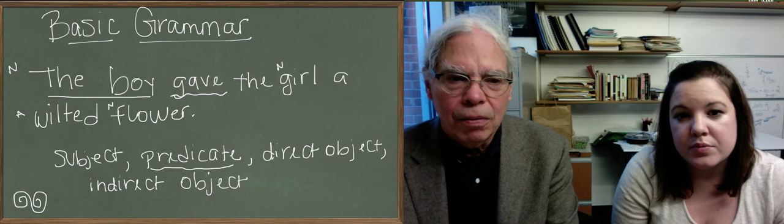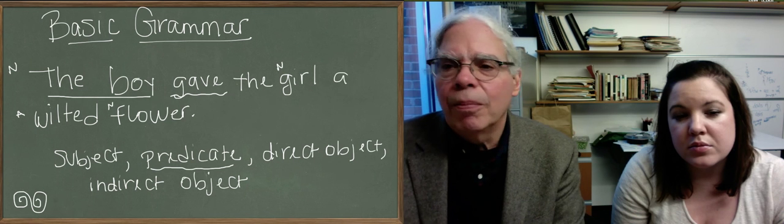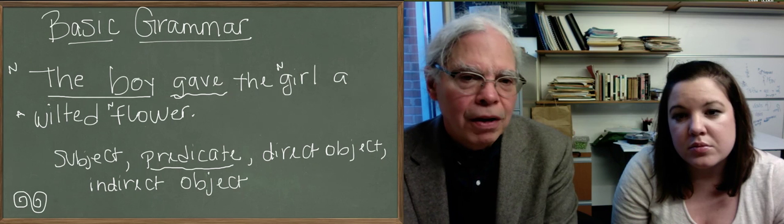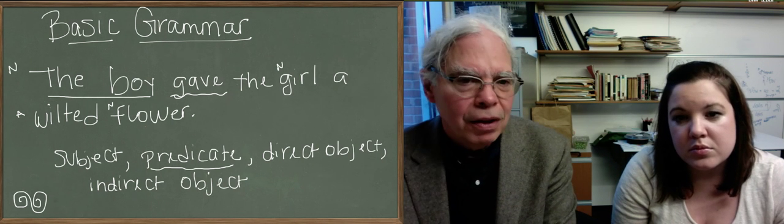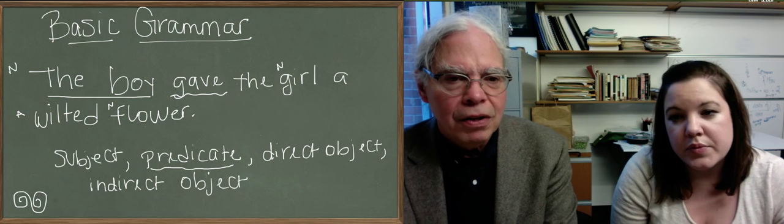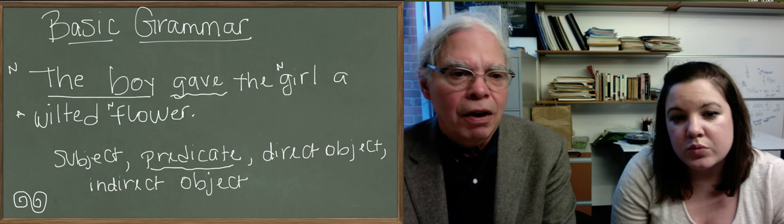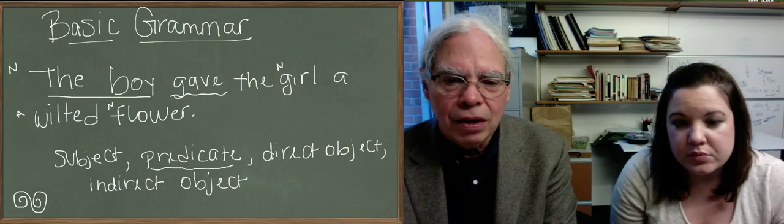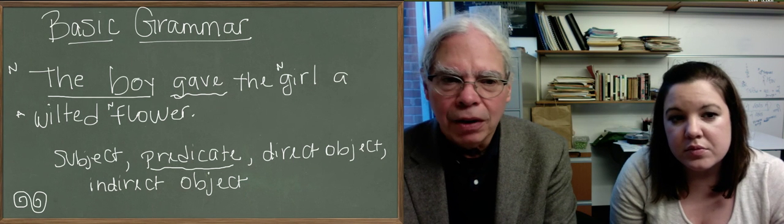Because one way to tell is you can recast this sentence into a form. The boy gave the girl a wilted flower, the boy gave a wilted flower to the girl. So to the girl, it's clear that the thing that's really being acted on is the flower. And the girl is an accessory, so to speak, to the action and is therefore an indirect object.